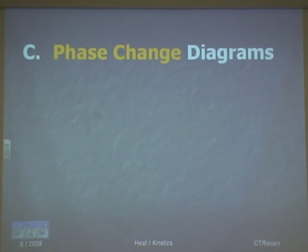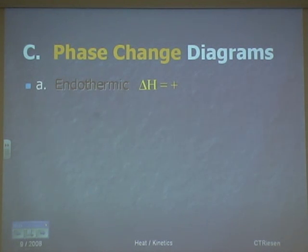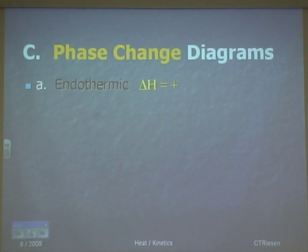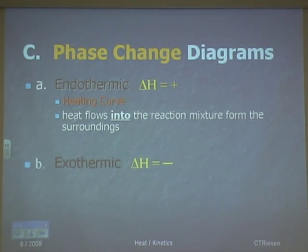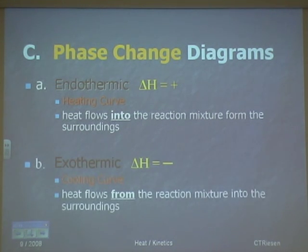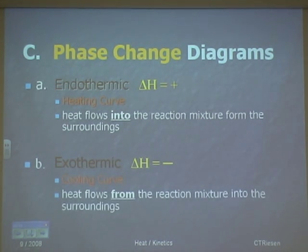We have what's called phase change diagrams. When energy is gained, that is called endothermic — 'in heat' literally. Mathematically we use a plus sign, and that delta symbol means change in heat. That's a heating curve, where heat flows into the reaction from the surroundings. Then we have exothermic — 'out heat' — where the heat change is negative. We call that a cooling curve, where heat flows from the reaction mixture into the surroundings.